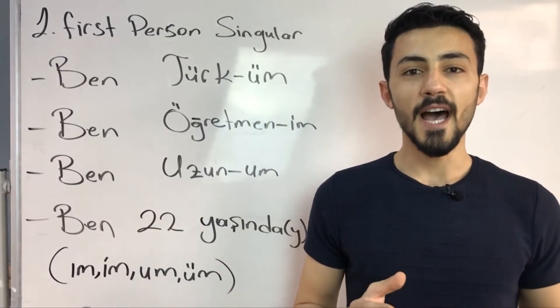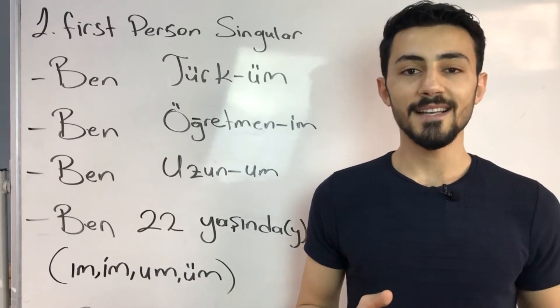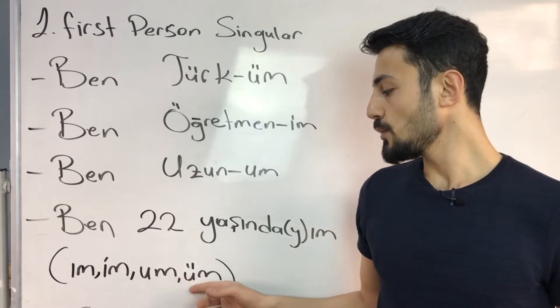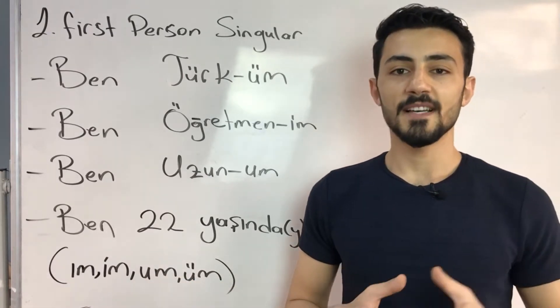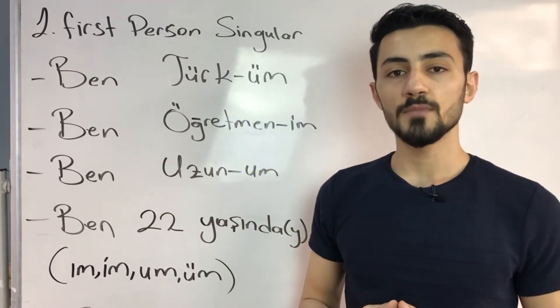In first person singular we have four forms of suffixes which we add at the end of the verb. These are ım, im, um, üm. Let me give you some examples. Ben Türküm - I am Turk.